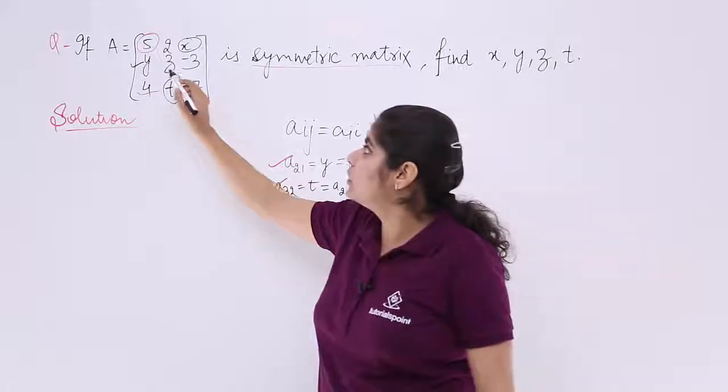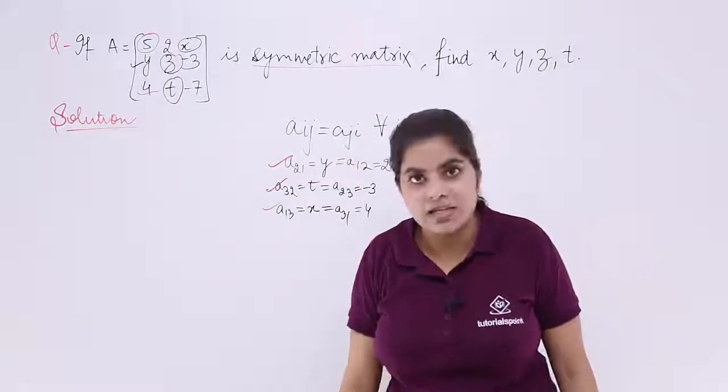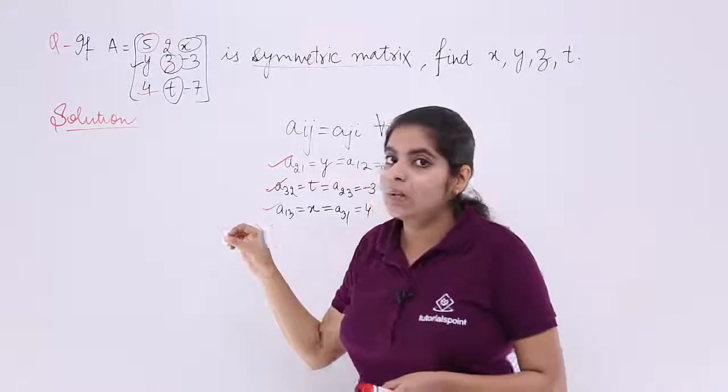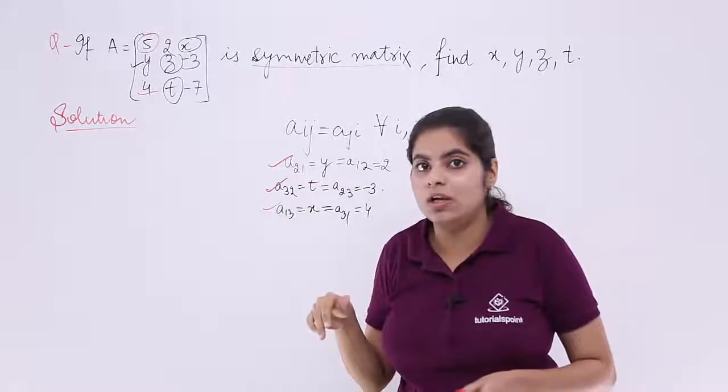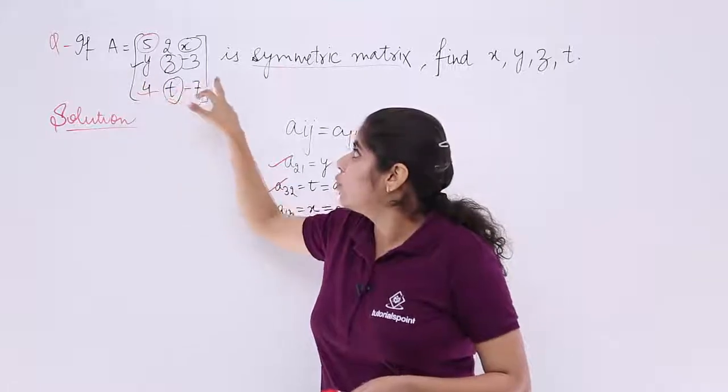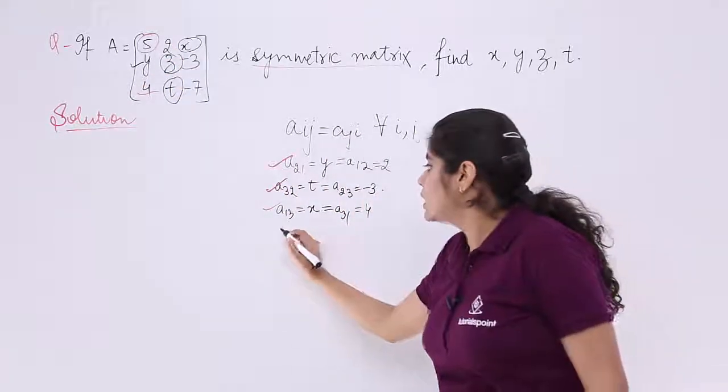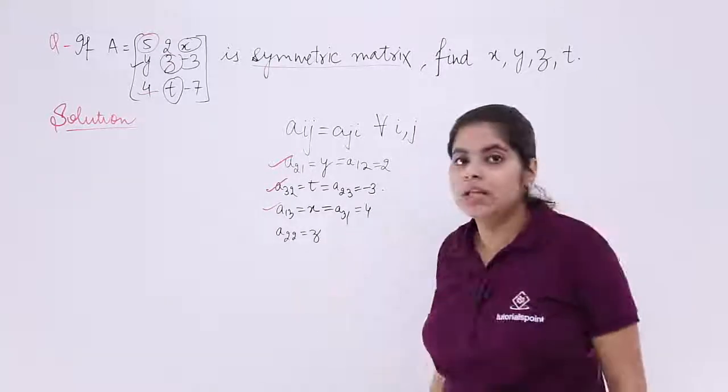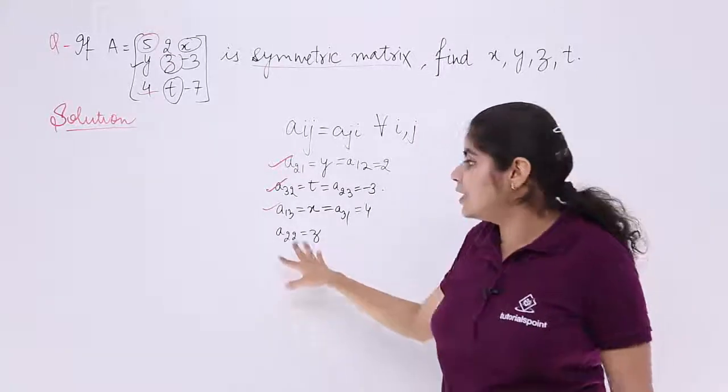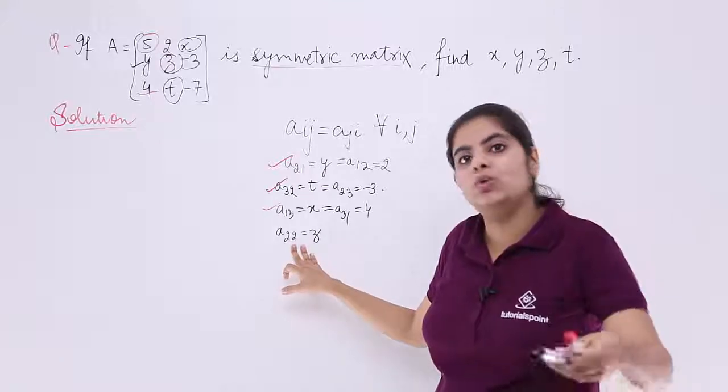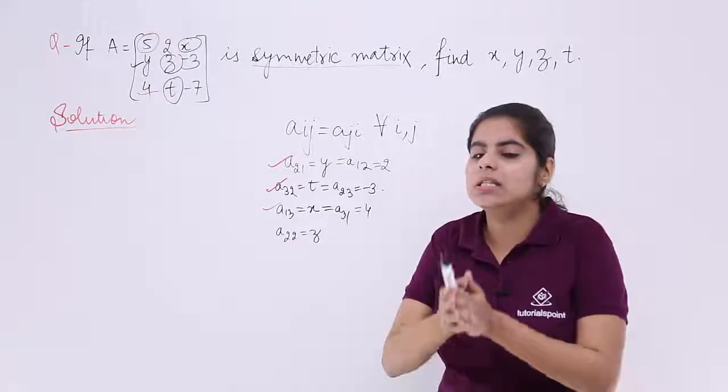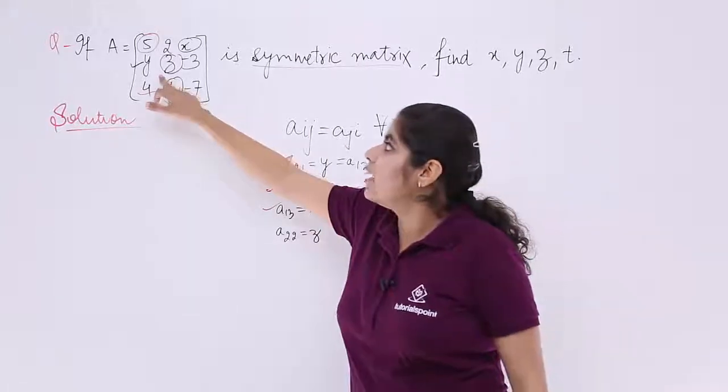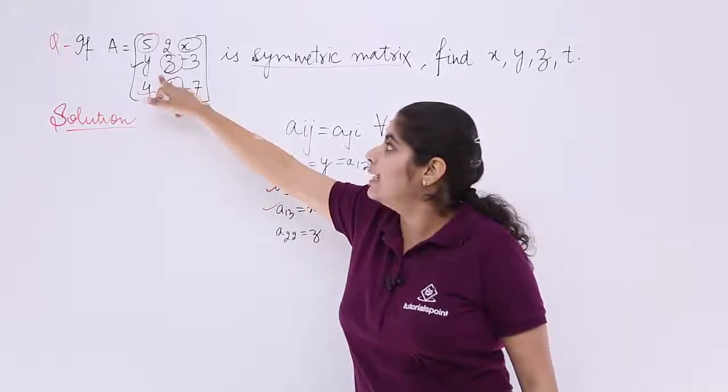What we are left with? We are left with the central element and that central element is z. What is z? Now, z means something which is in the second row and second column. It is A_22 which is equal to z.